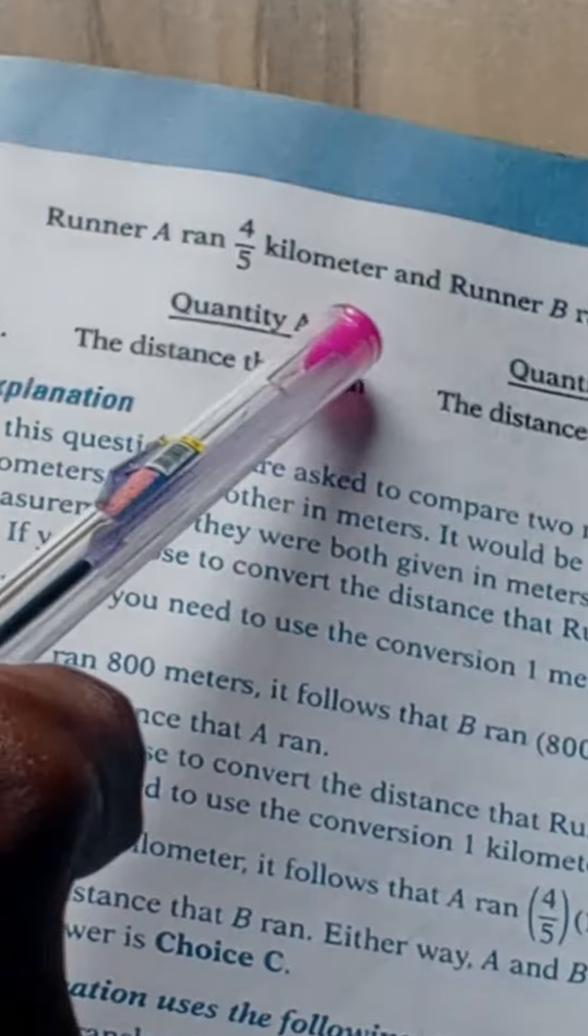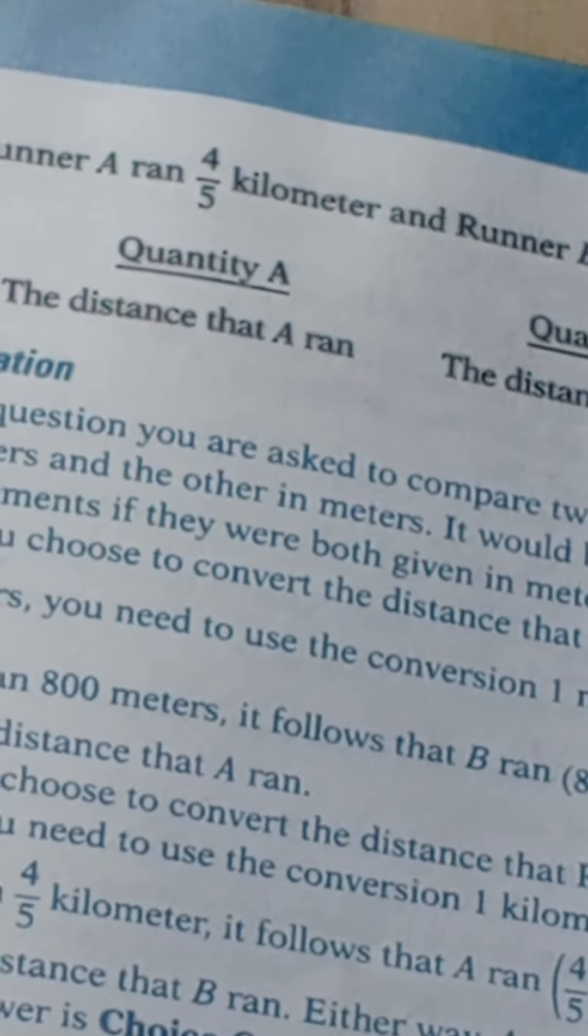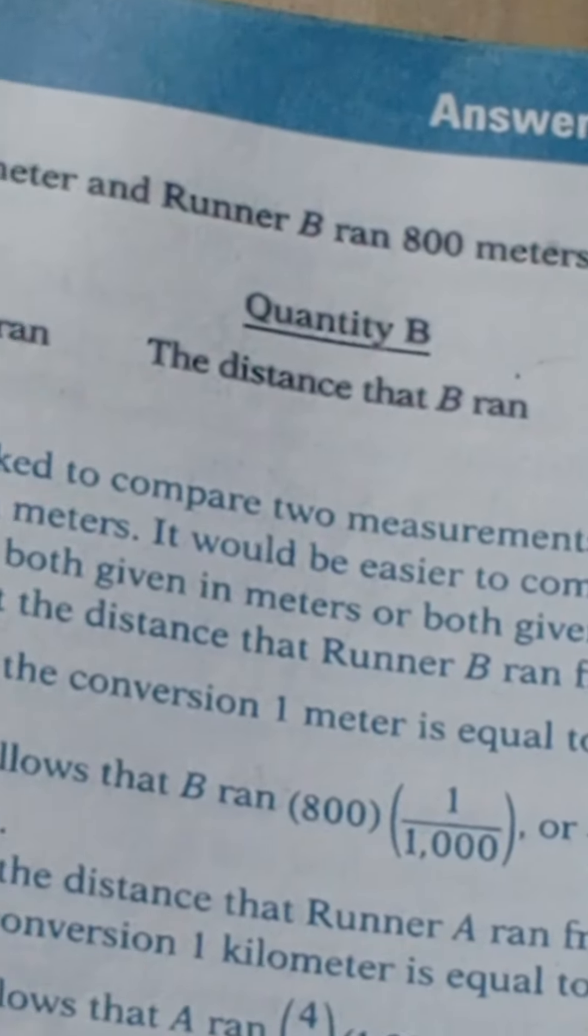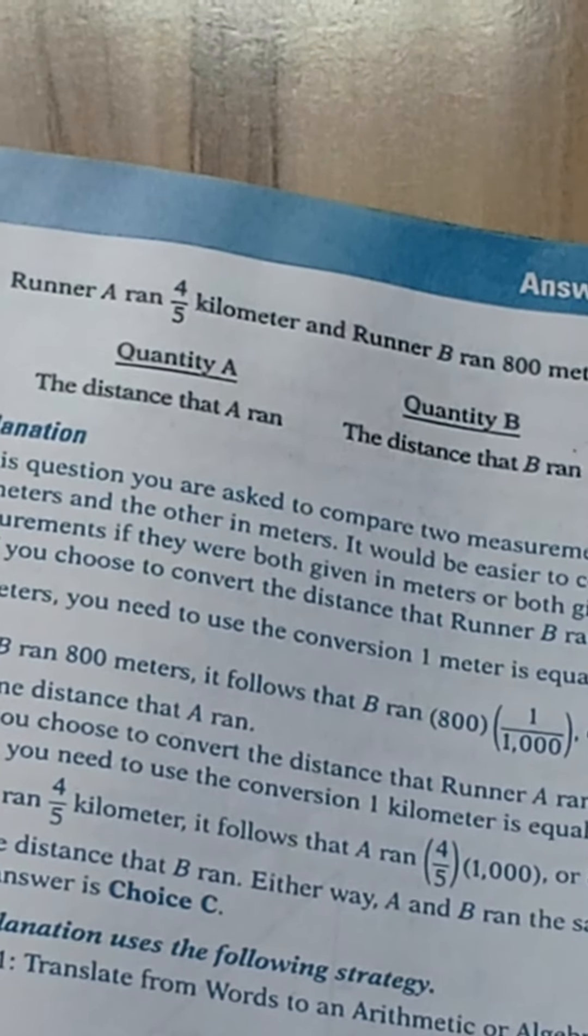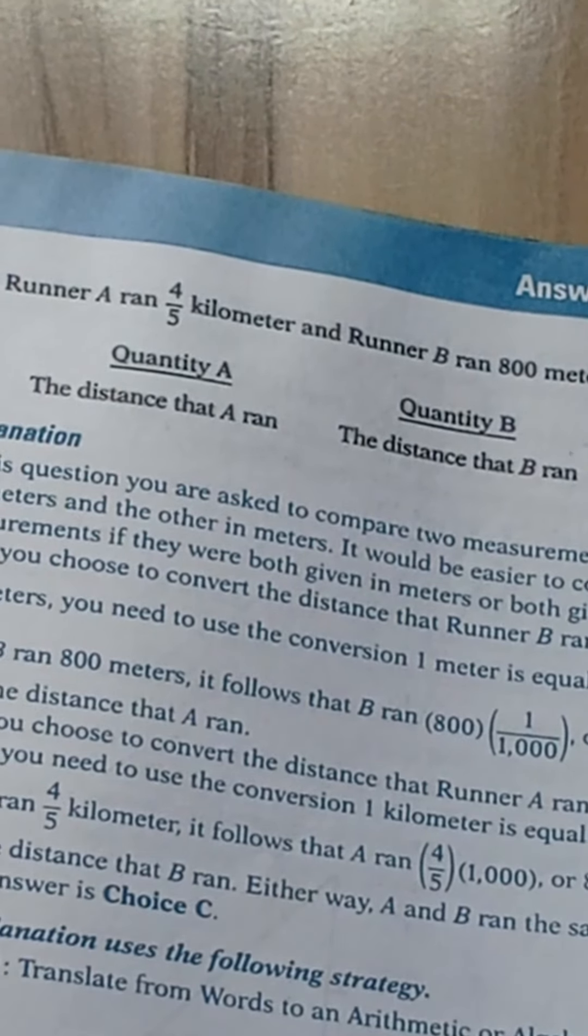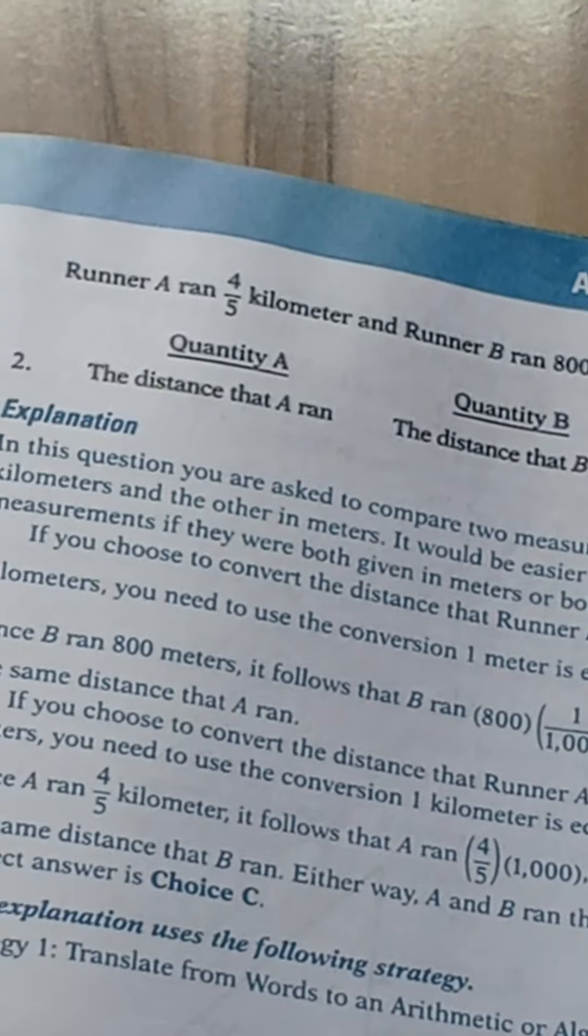So quantity A is 800 meters and quantity B is 800 meters. We can see that both quantities are equal. Therefore, we are going to pick C as our answer.